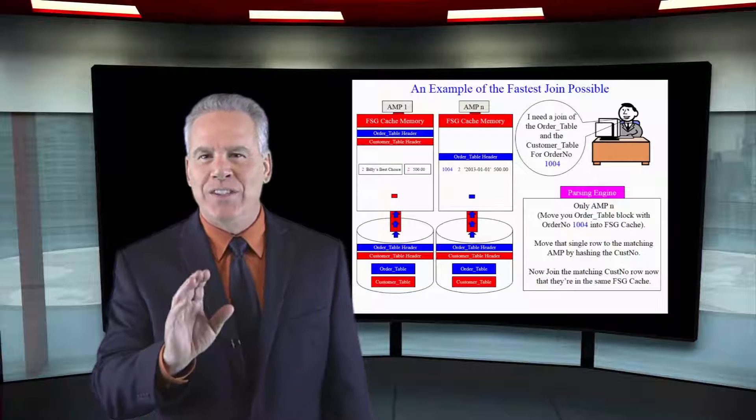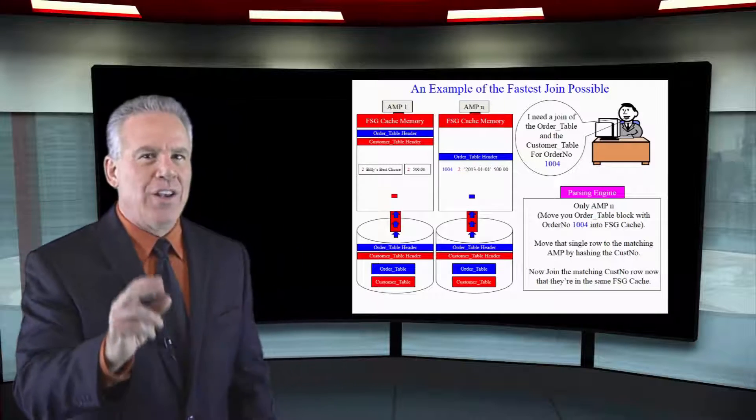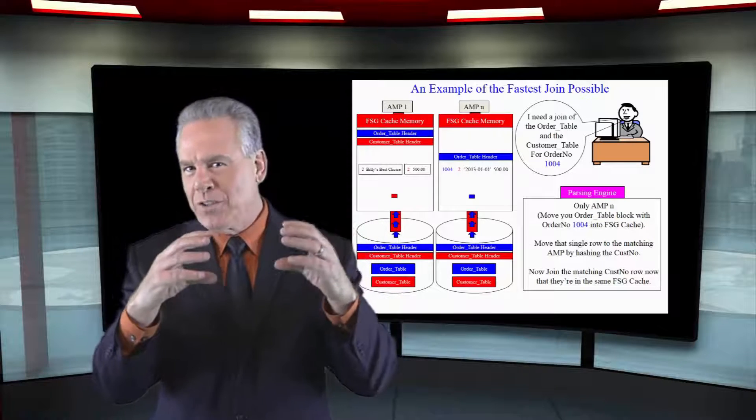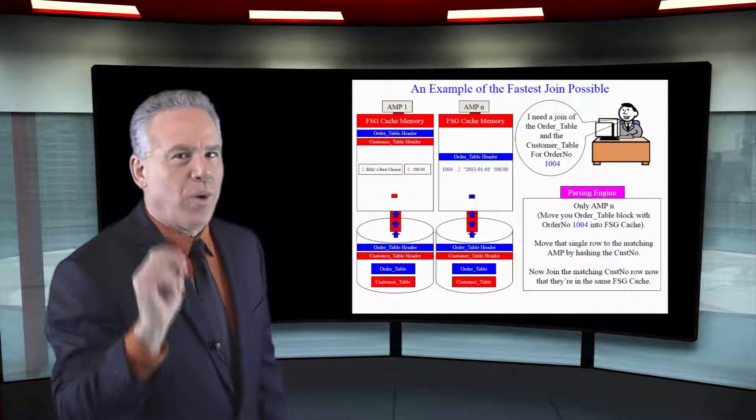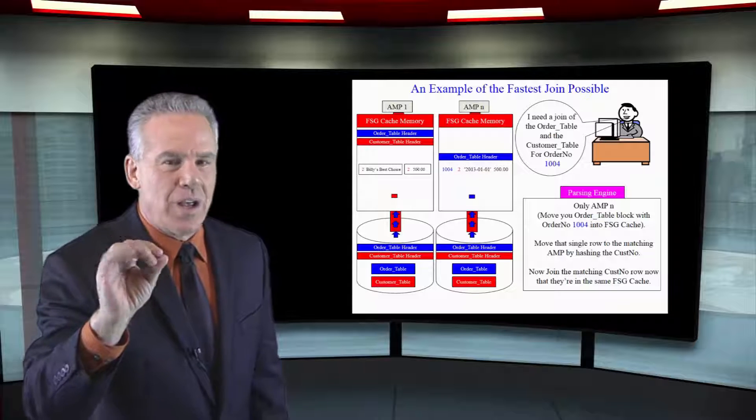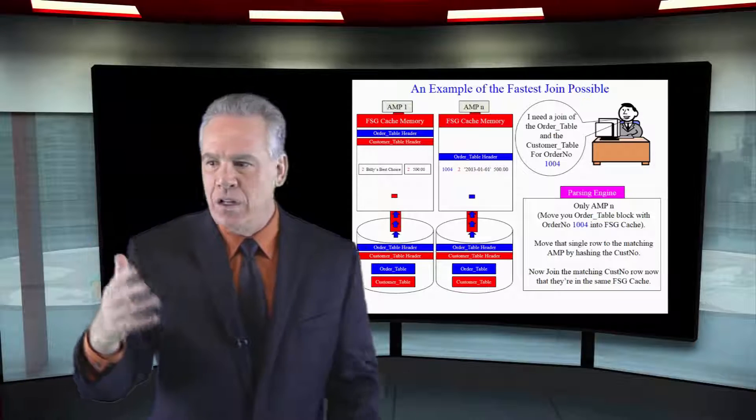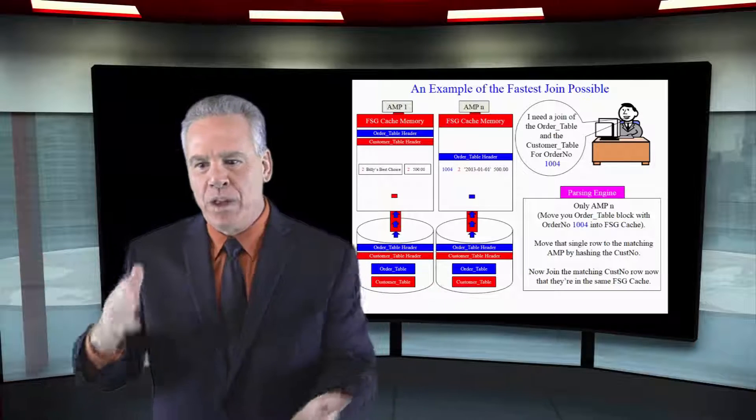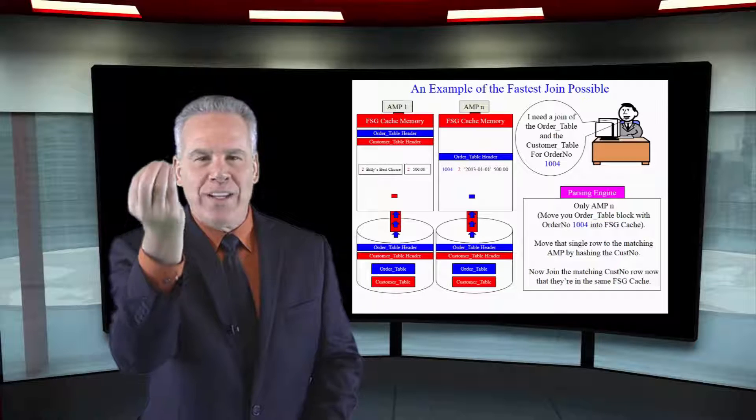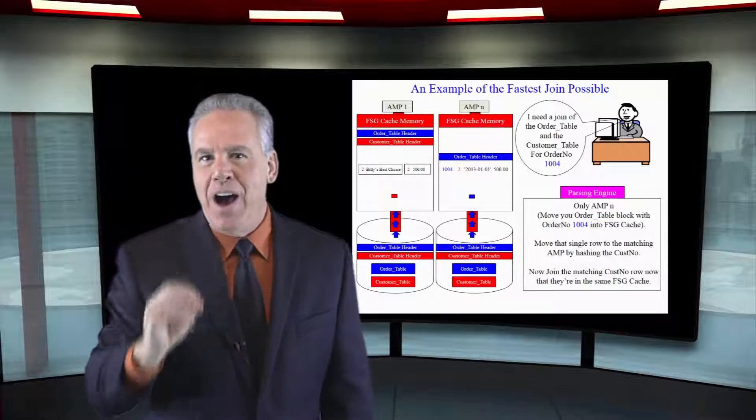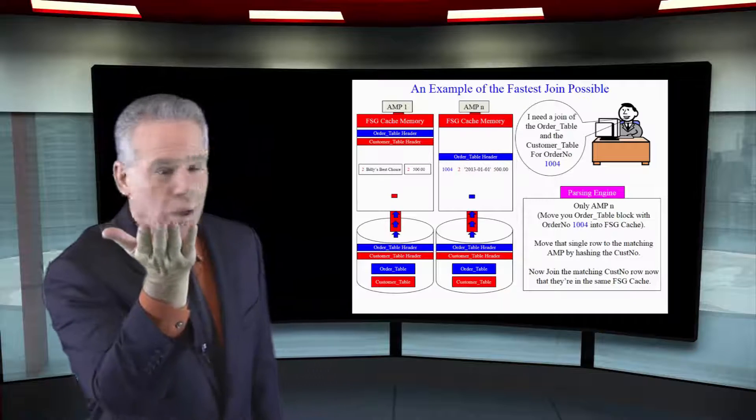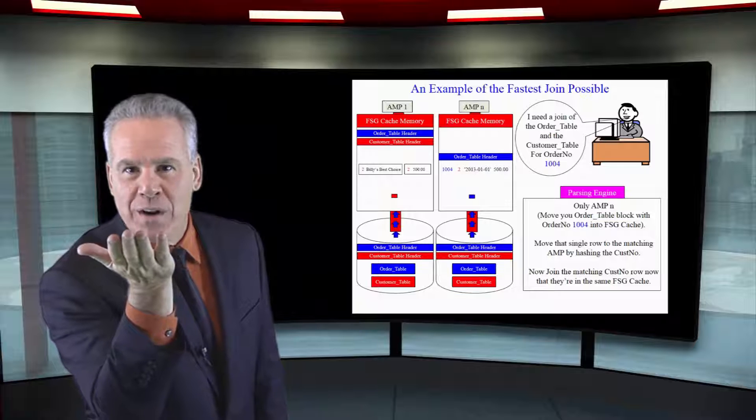I want you to see this in slow motion so it really hits home. We said we want to join these two tables where customer number equals customer number and we want where the order number is equal to 1004. So the parsing engine says order number is the primary index of the order table. Find that with a single amp retrieve in one second and that row is delivered perfectly up into the memory. At that point in time they say 1004, what's your customer number? Oh, customer number two.